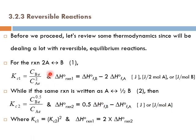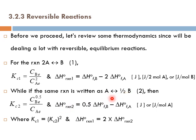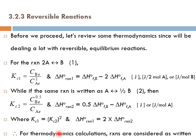Since we're talking about the same reactions, we can notice that Kc1 simply equals Kc2 raised to the power 2. The delta H reaction for the first stoichiometry equals two times the delta H reaction for the second stoichiometry. This shows how the change in stoichiometry changes the values of Kc and delta H reaction. Therefore, for thermodynamic calculations, reactions are considered as written.